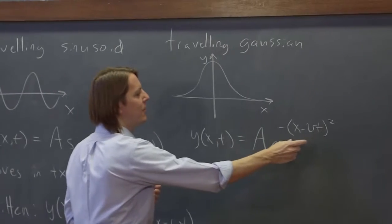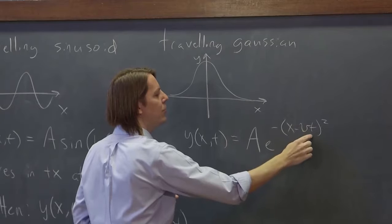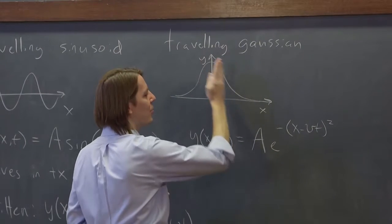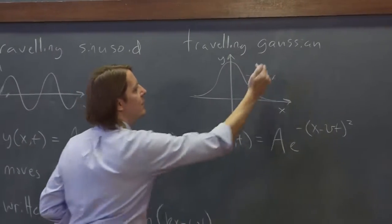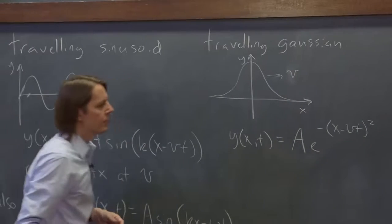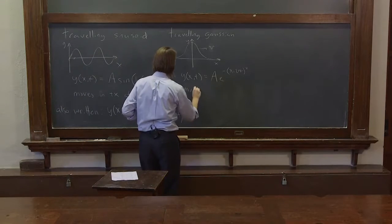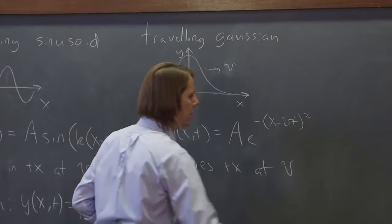And again, in this case, if you want to figure out how it's going to move, think of the maximum position at zero. If vt grows, if you move forward in time to make this remain zero where the maximum, and keep up where the maximum is, x has to grow. So that's going to move that way at v. So this moves plus x direction at v.